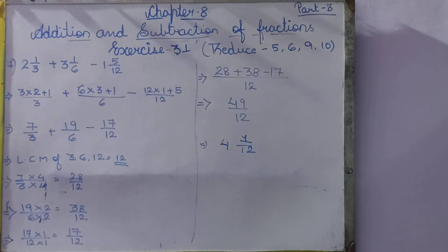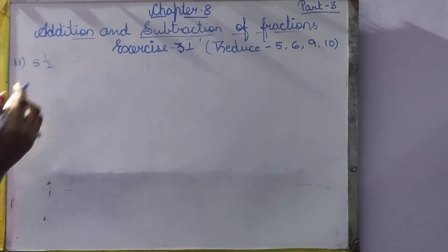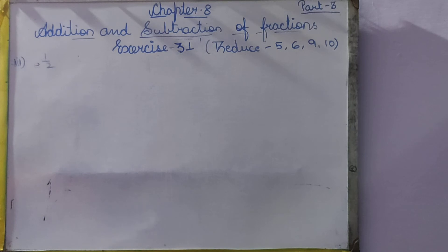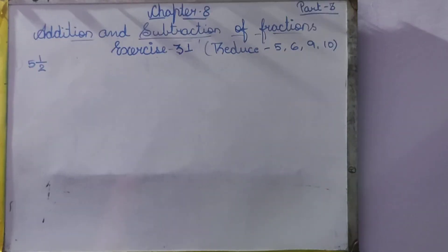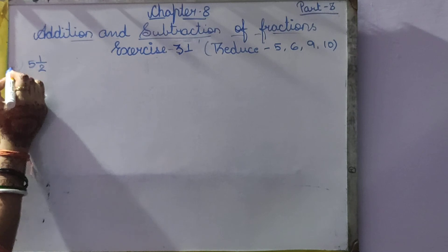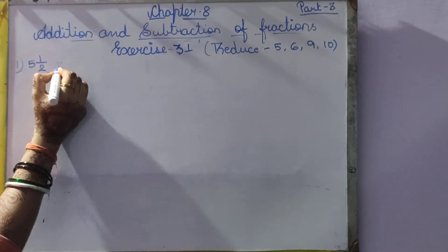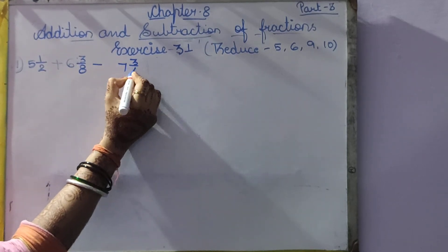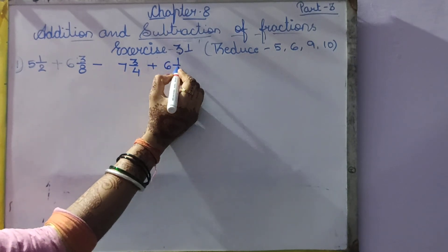Question number 8 is the same as question number 7 — it is there in your notes, you can copy it from there. Cut questions 9 and 10. Question number 11 is: subtract the sum of 5 and 1 by 2 and 6 and 3 by 8 from the sum of 7 and 3 by 4 and 6 and 1 by 2.